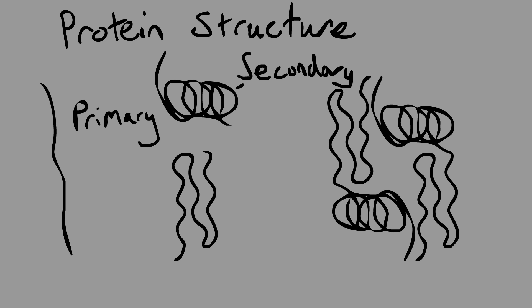Another secondary structure is the beta pleated sheet. This is where, instead of forming a tight coil, the amino acids line up in a strand and form a flat structure that pleats.